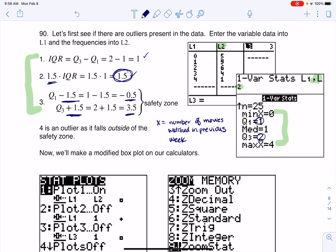Now I check if any values for number of movies watched are outside the safety zone. Zero is in the safety zone, not an outlier. One is between -0.5 and 3.5, so is two, so is three. But there's a problem at four. Four doesn't live in the safety zone because four is greater than 3.5. This means the student who watched four movies is an outlier, and I'll keep that in mind.